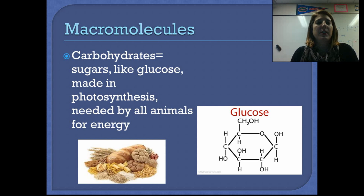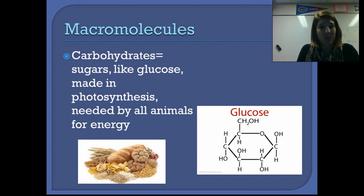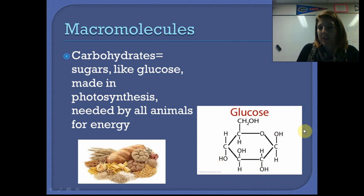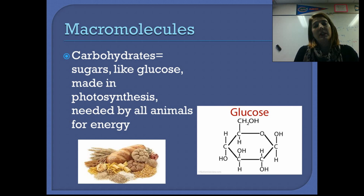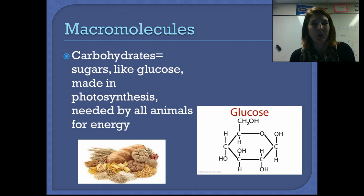The third macromolecule is carbohydrates — our energy molecules. They're sugars: things like glucose, fructose, and galactose. We typically think of bread and pasta as carbohydrates, but almost all the food we eat has carbohydrates because that's how we get quick energy. Our body is very good at breaking down these carbohydrates. Glucose is the basic carbohydrate and is made by plants during photosynthesis. Plants take in energy from the sun and turn it into a chemical form — the energy is held within the bonds of the glucose molecule. We can't do that as consumers; we have to eat glucose, and it's needed by all organisms that are consumers.